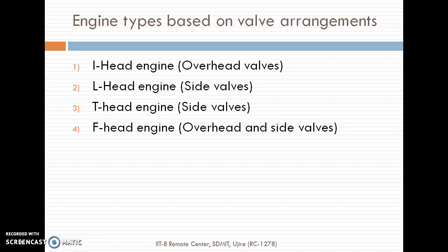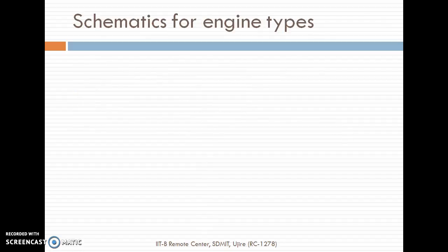There are four basic arrangements based on the valve constructions: I-Head, L-Head, T-Head, and F-Head. As we can see, the I-Head engine contains overhead valves alone, whereas the L-Head engine consists of side valves. The same is the case for the T-Head engine, whereas the F-Head engine contains both overhead and side valves. Now we will see the schematics of each of these engine types.